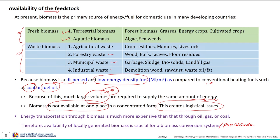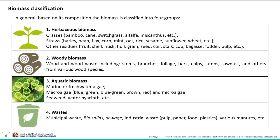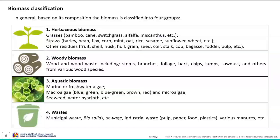Examples of fresh biomass include terrestrial biomass and aquatic biomass. Waste biomass, being a derived product, is not available immediately — that is agricultural waste, forestry waste, municipal waste and industrial waste — whereas fresh biomass is readily available. Bio-based feedstock materials are classified into four groups: herbaceous biomass, woody biomass, aquatic biomass, and waste biomass.